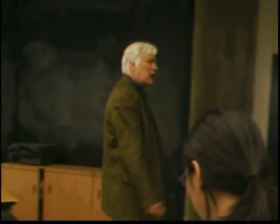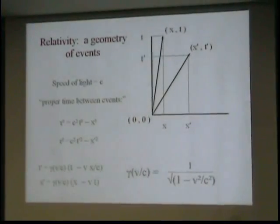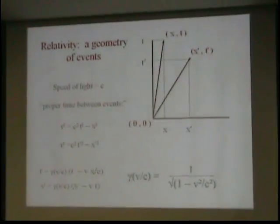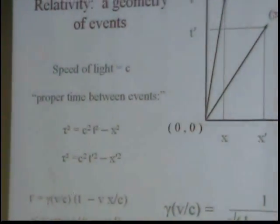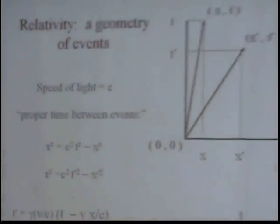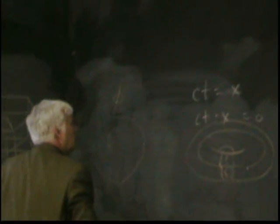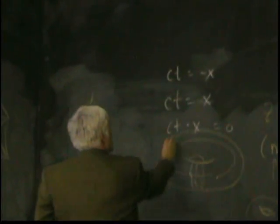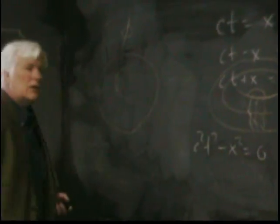So Einstein had a problem. Basically, if I have a flashbulb go off at position x equals zero, t equals zero, photons will travel out. Photons are the special ones for which the speed of light times t must equal x — in other words, c times t minus x equals zero. Photons will also go in the opposite direction, so ct plus x equals zero. Multiplying these two together gives c squared t squared minus x squared equals zero. That's the equation of motion of all photons.